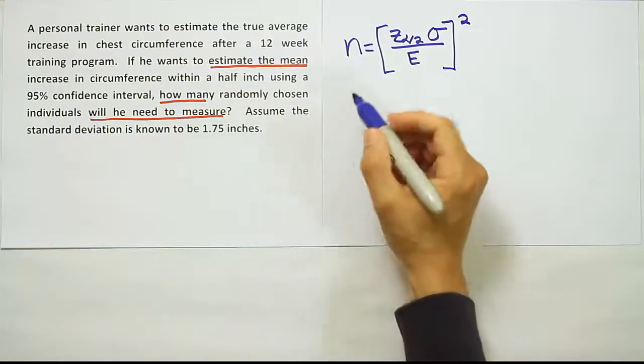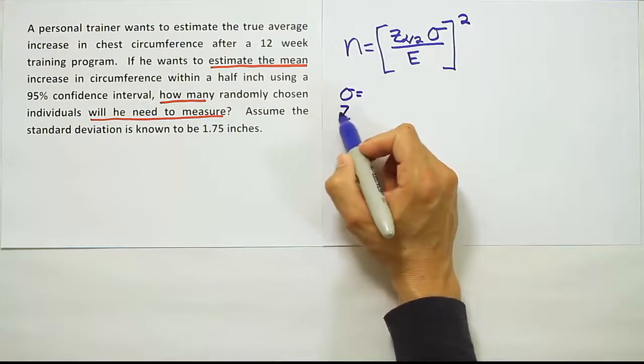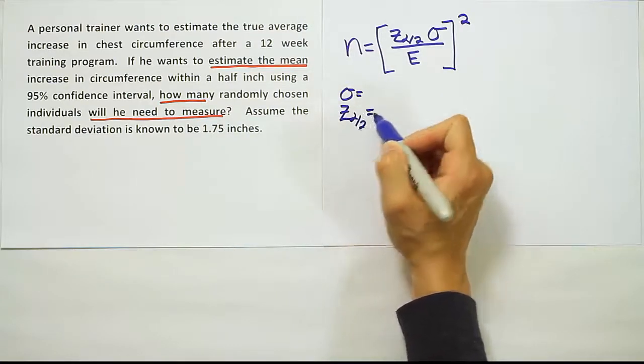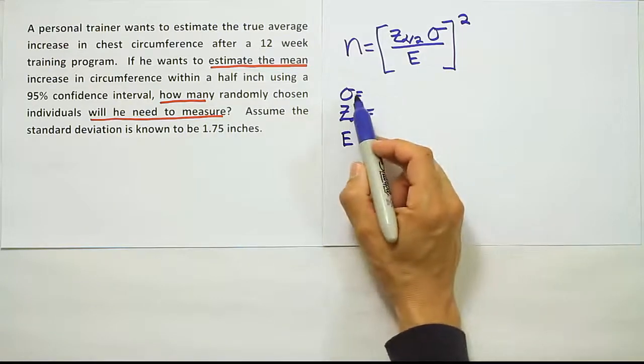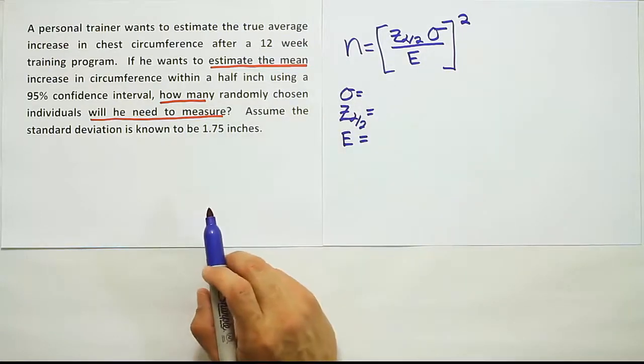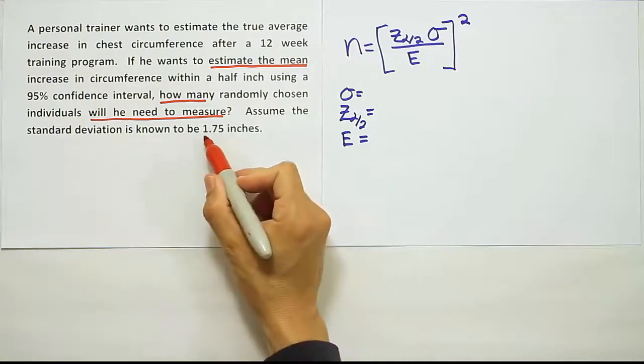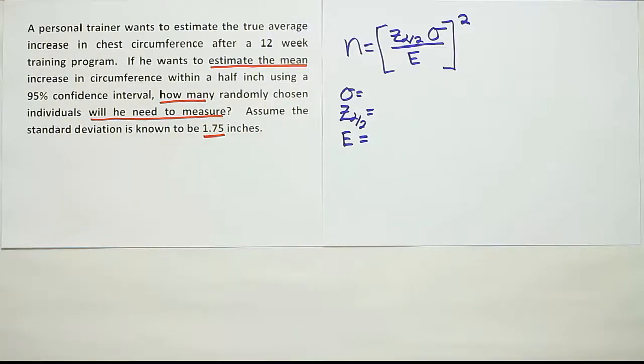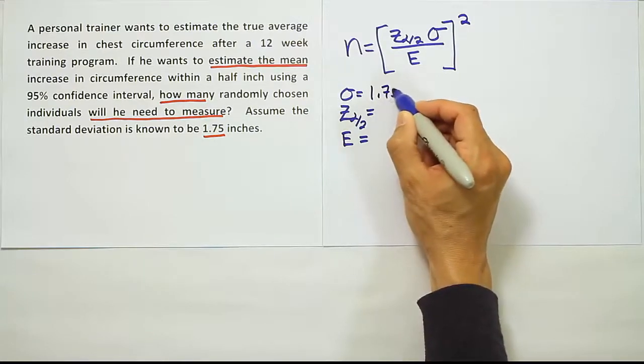Let's list the variables we're going to need for this formula. We need the standard deviation, z alpha divided by 2, and the margin of error. The easiest one to find is usually the population standard deviation. It says assume the standard deviation is known to be 1.75 inches, so sigma equals 1.75.